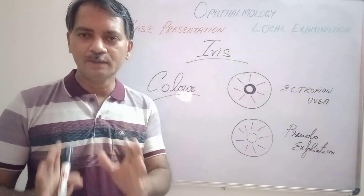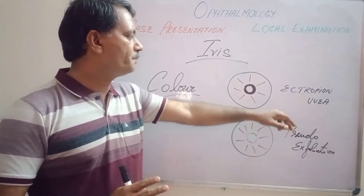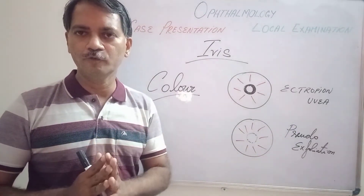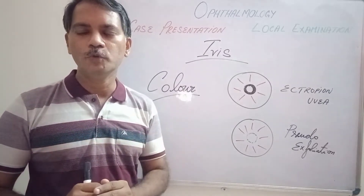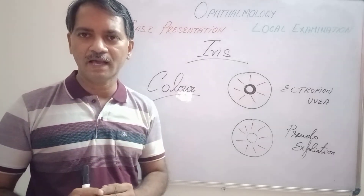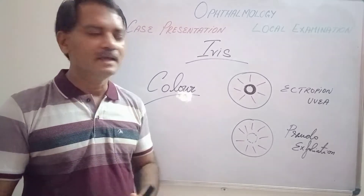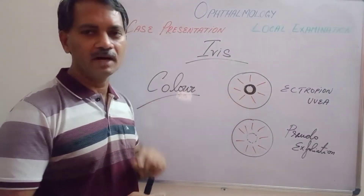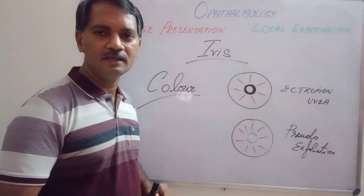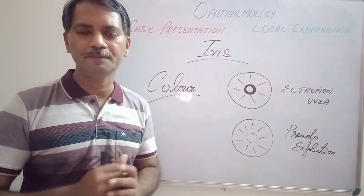Two important terminologies which everyone — either UGs or PGs — should know are ectropion uvea and pseudo-exfoliation. What is ectropion uvea? It is the eversion of the pupillary border. When the pupillary border everts, the epithelium lining the posterior surface of the iris is seen in a wider area at the pupillary margin. So if the pupillary iris is brown in color, that part close to the pupillary margin will be black in color and wider. That is called ectropion uvea.